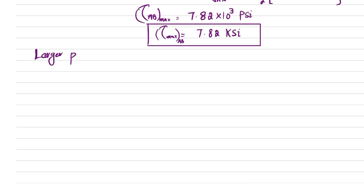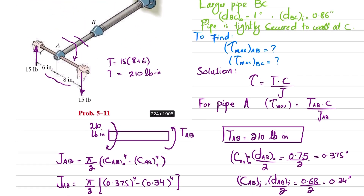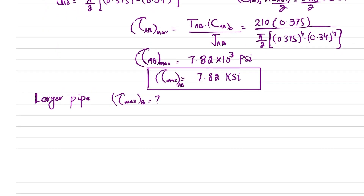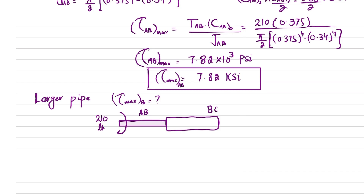Now we move to the larger pipe BC. We cut pipe BC and draw the free body diagram showing both pipe AB and pipe BC. The applied torque is 210 pound-inches. The internal torque T_BC acts in the counterclockwise direction, and by equilibrium T_BC also equals 210 pound-inches.